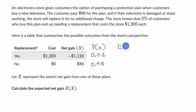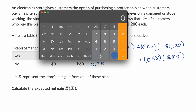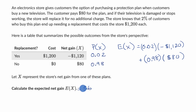Our expected net gain is going to be equal to the probability of needing a replacement times the net gain of a replacement: 0.02 times negative $1,120. Plus the probability of not needing a replacement, 0.98, times the net gain there, which is $80. So we have 0.02 times negative 1,120 plus 0.98 times 80, which equals $56. And now you understand why the stores like to sell these replacement plans.